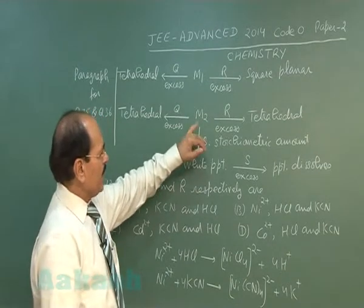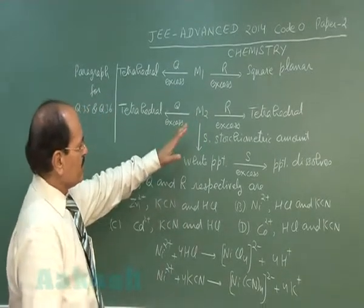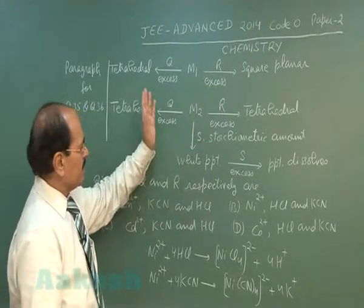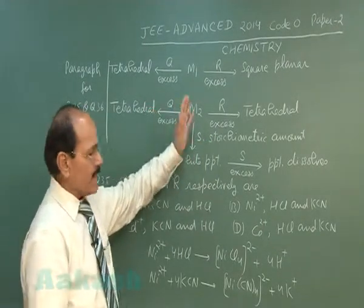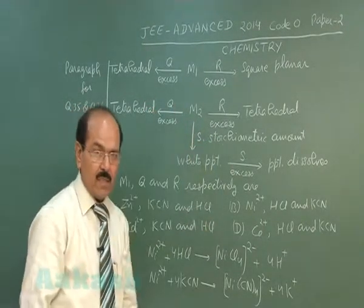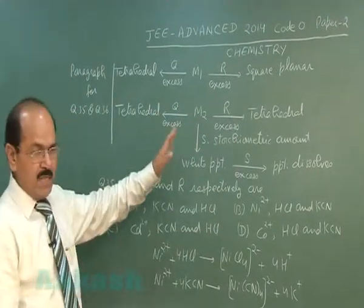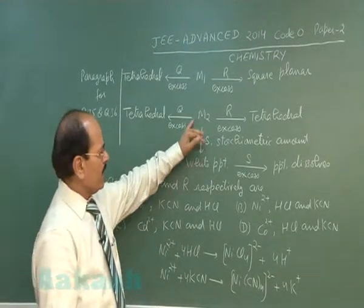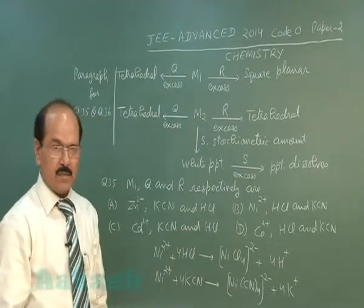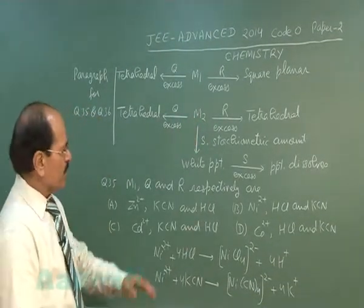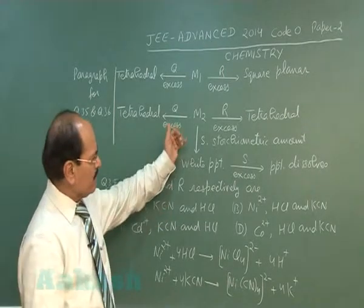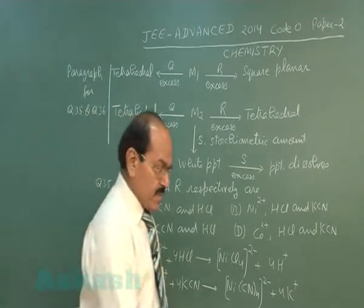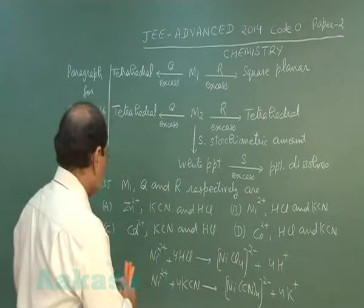Metal M2, because it gives a tetrahedral complex whether it reacts with HCl or KCN, must be zinc ion. So metal ion M2 is zinc ion. The next question pertains to reagent S, so we move on to question 36.